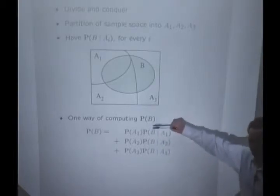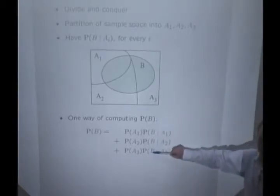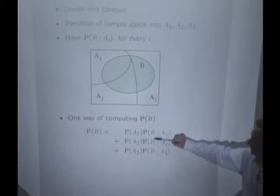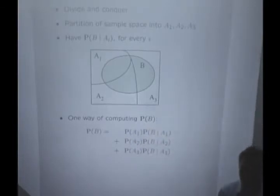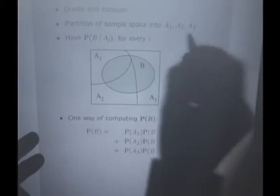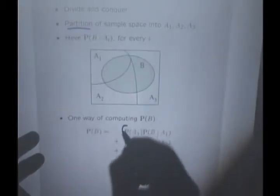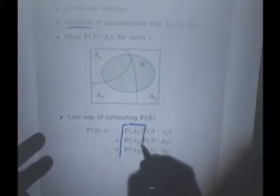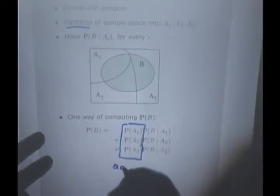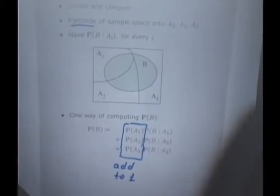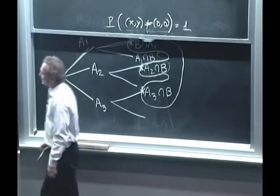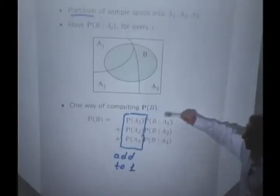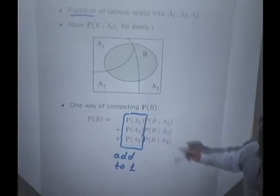Under some scenario, B may be very likely. Under another scenario, it may be very unlikely. We take all these into account and weigh them according to the likelihood of the scenarios. Now, notice that since A1, A2, and A3 form a partition, these three probabilities have what property? Add to what? They add to one, right? So it's the probability of this branch plus this branch plus this branch. So what we have here is a weighted average of the probabilities of the Bs in the different worlds or in the different scenarios.